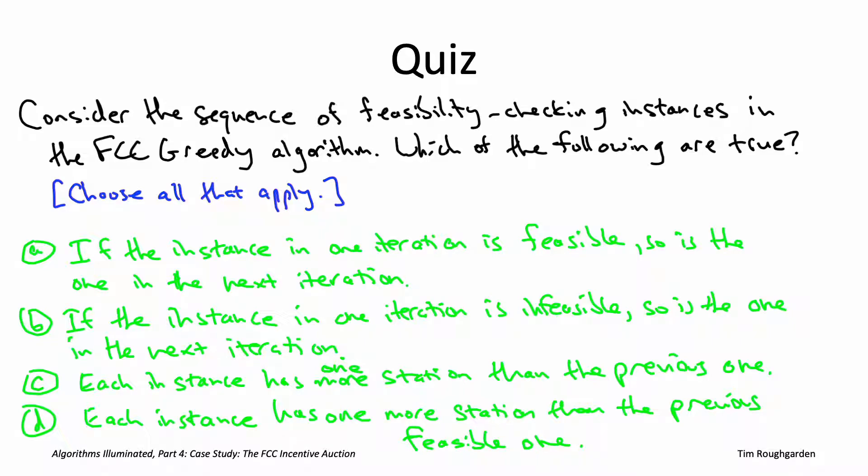So only one of these four statements is correct, and that is the last statement. So answer D is correct, the other three are incorrect. Let's talk through the solution, beginning with answer A. Actually, answer A doesn't make a lot of sense if you think about it. So that's asserting that as soon as you hit an iteration of the for loop which is feasible, then all of them are going to be feasible. But, for example, the first iteration is definitely feasible. One station you can always accommodate on the air. And in general, toward the end of the algorithm, you expect to see some infeasible instances. So A doesn't make a lot of sense.